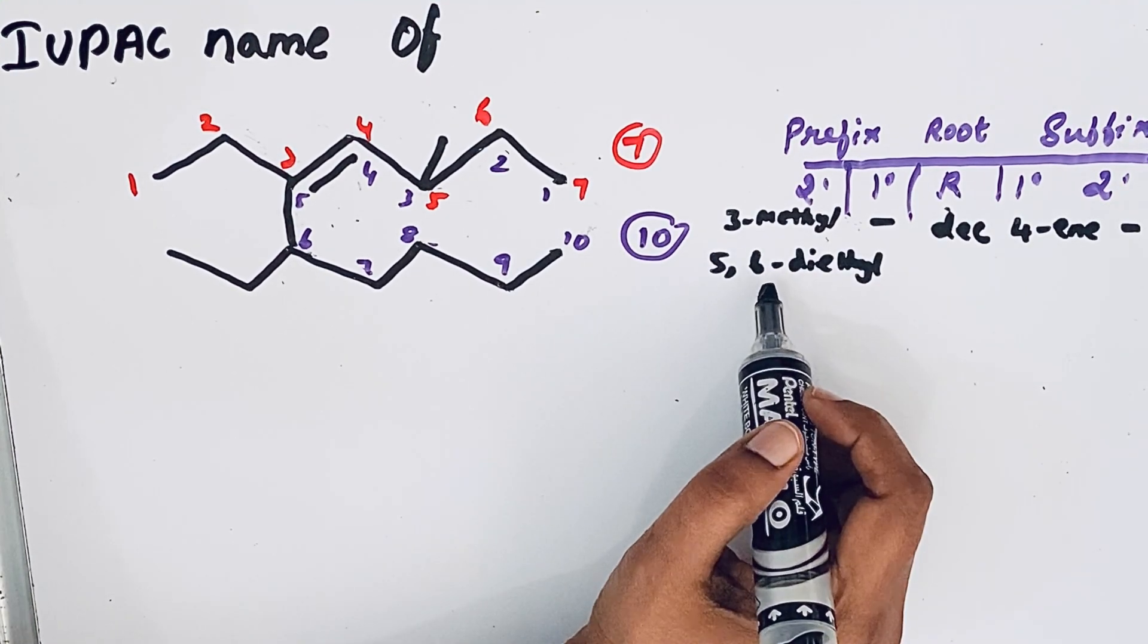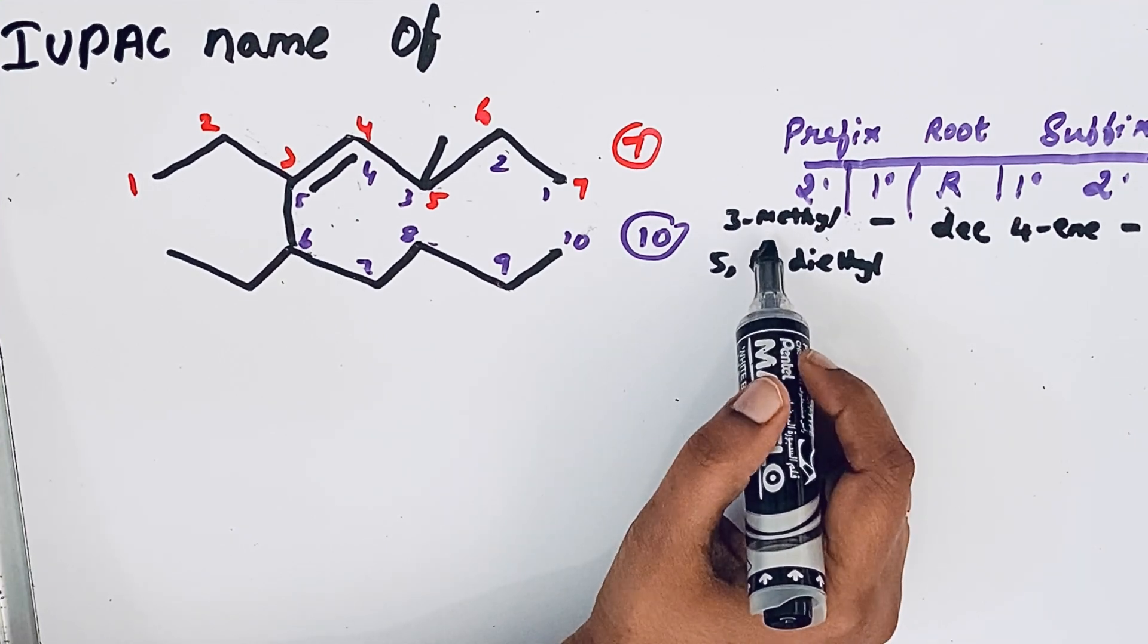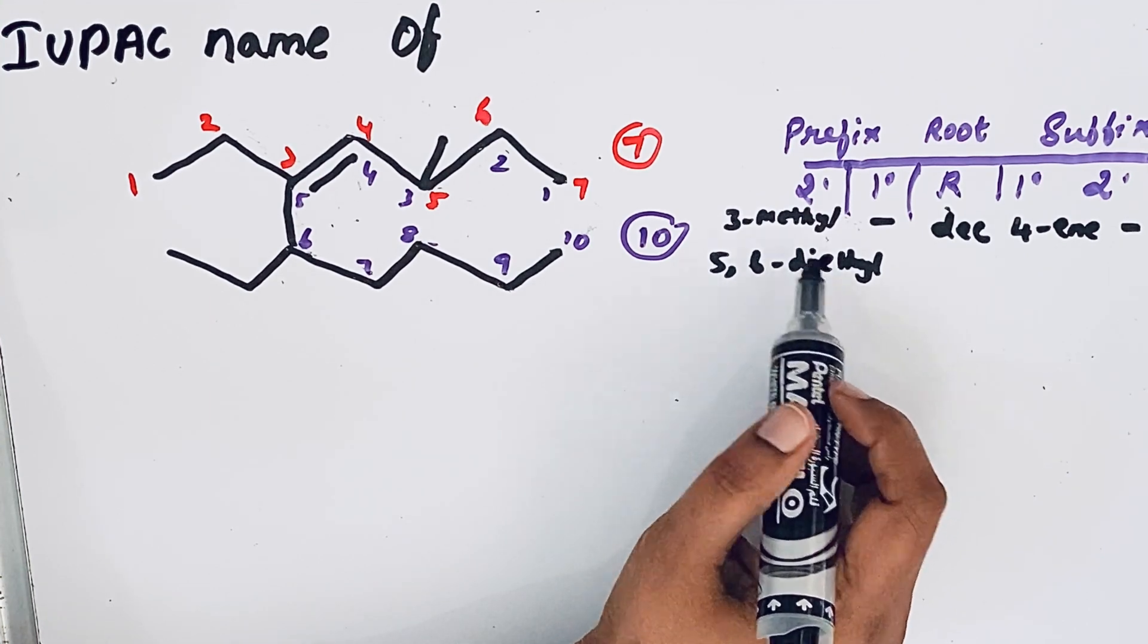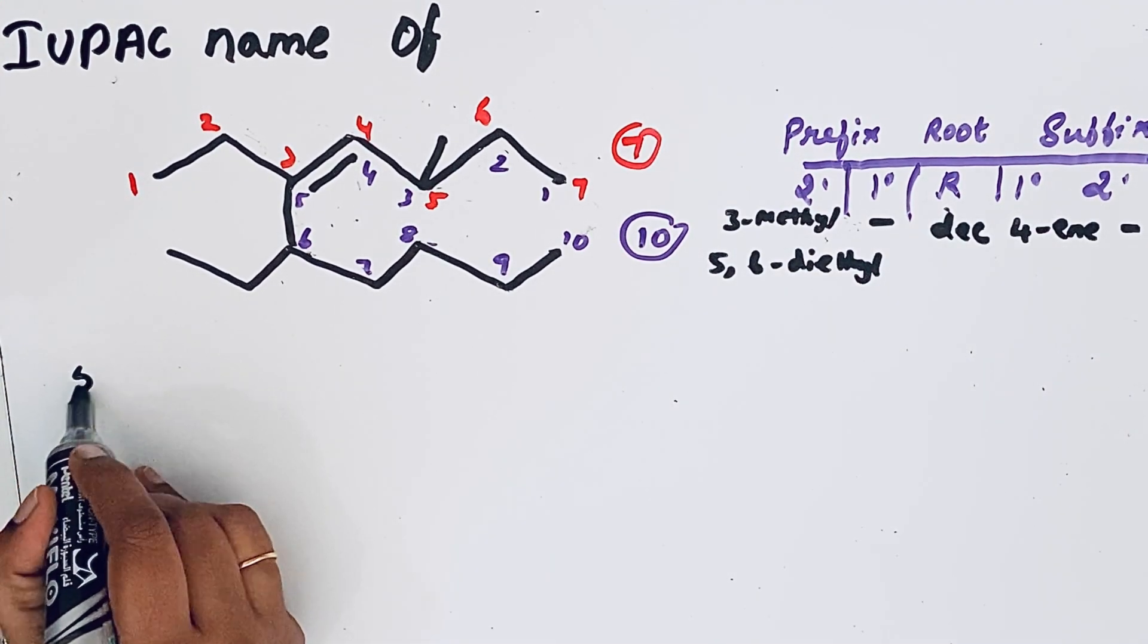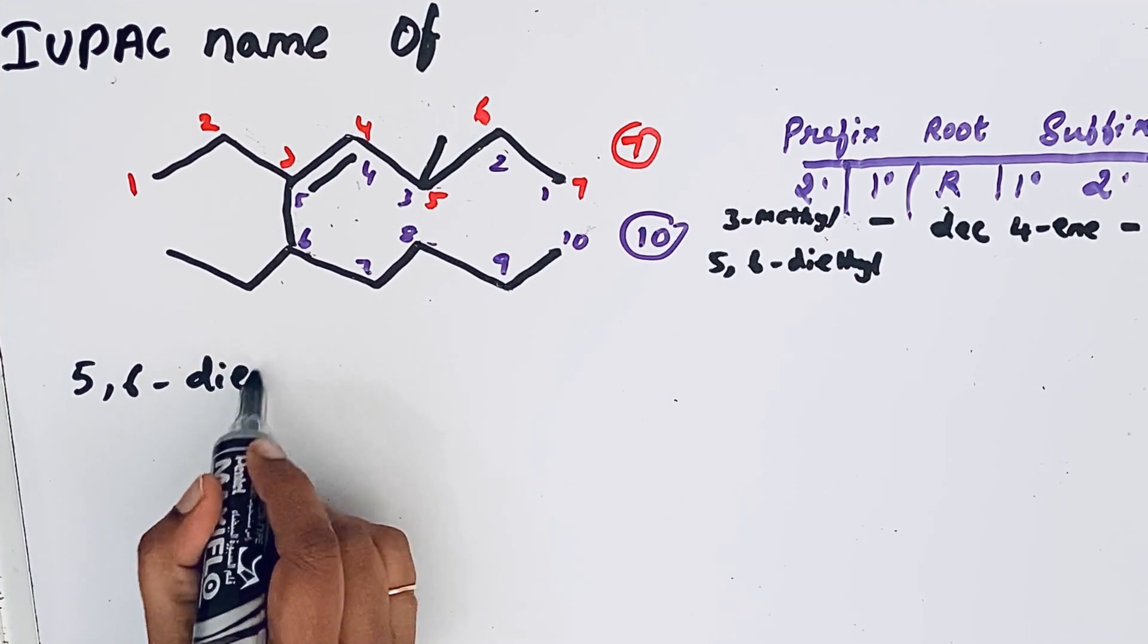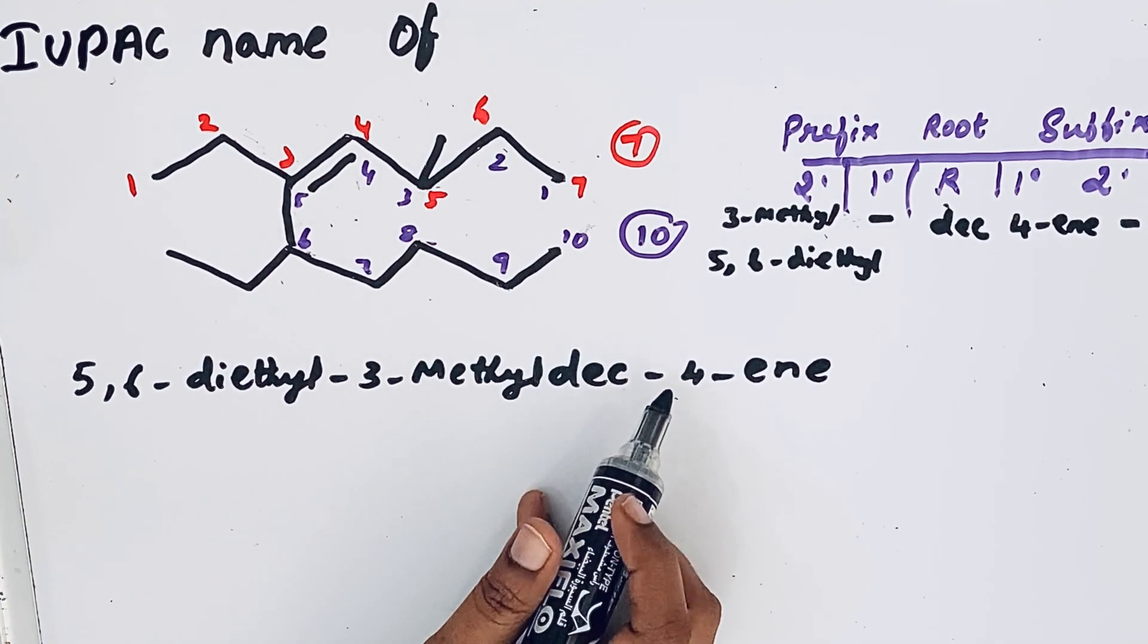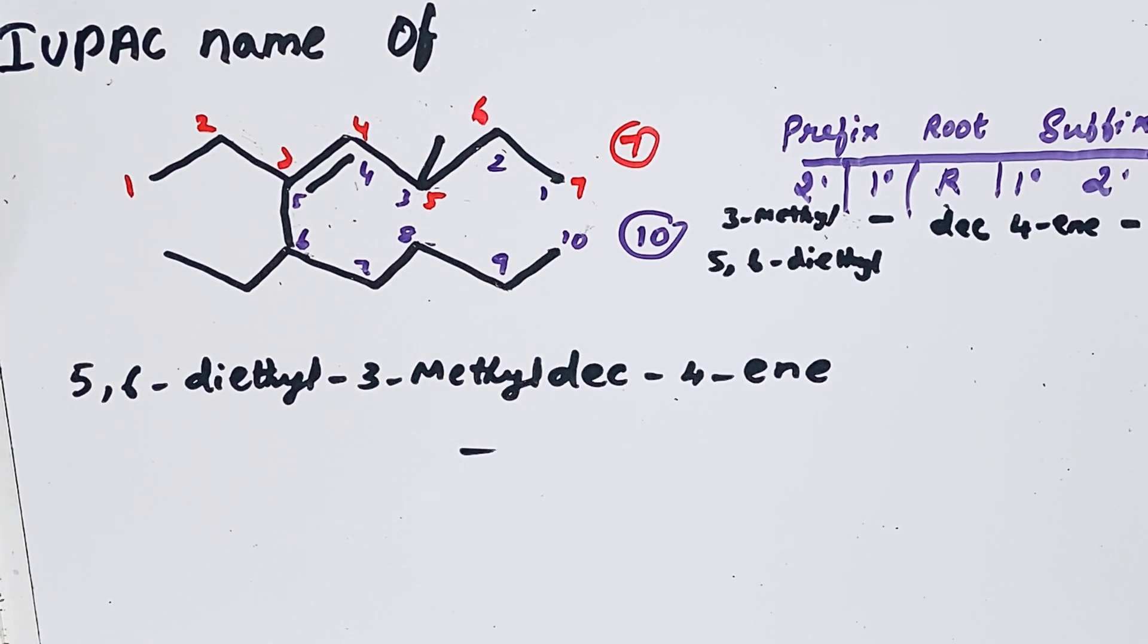According to alphabetical order, ethyl group gets the preference over methyl group. So while writing the IUPAC name we are writing 5,6-diethyl then 3-methyl. 5,6-diethyl-3-methyldec-4-ene is the IUPAC name for this compound. Thanks for watching.